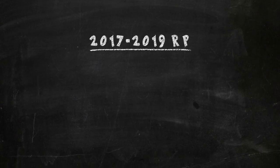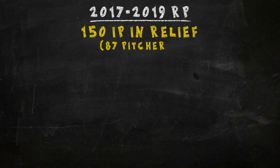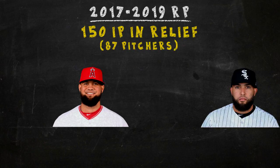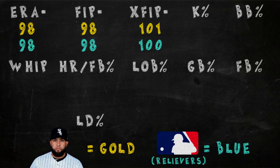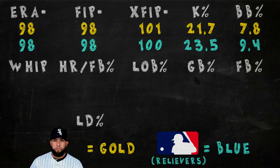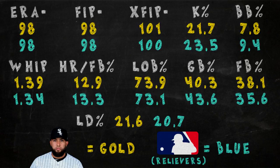Moving on to relievers over our three-year span, we have 87 pitchers with at least 150 innings pitched in relief. Our shortlist ended up being just two people: Luis Garcia and Kelvin Herrera, with Herrera being our pick. Herrera is essentially spot on with the run prevention metrics. He doesn't strike out or walk as many batters as the average reliever, but is pretty close in WHIP, left on base percentage, and home run per fly ball rate. As for the batted ball rates, Herrera is moderately close.